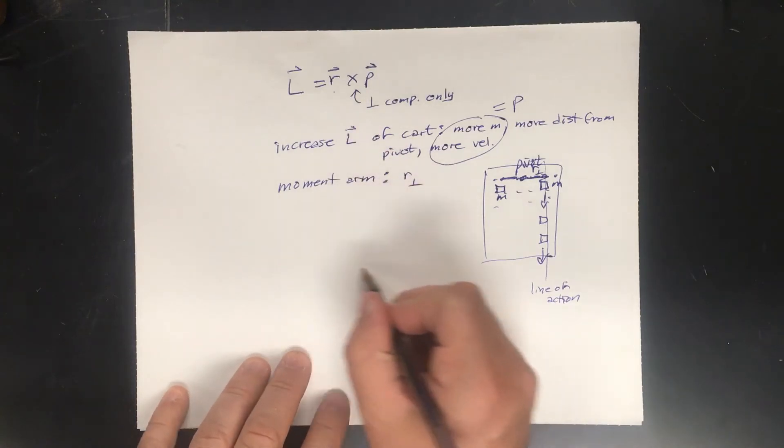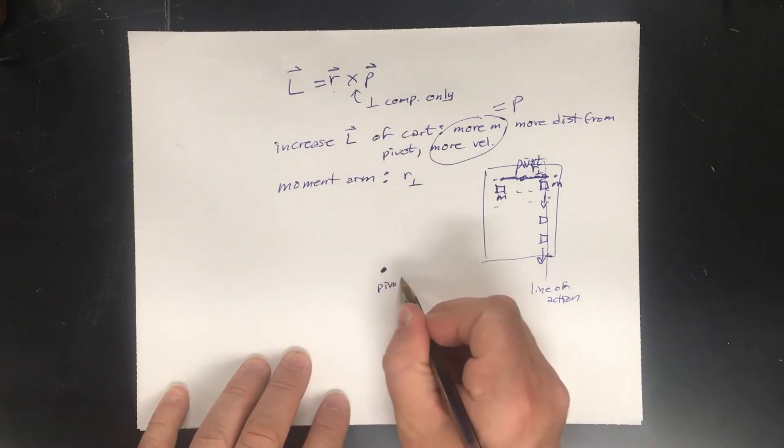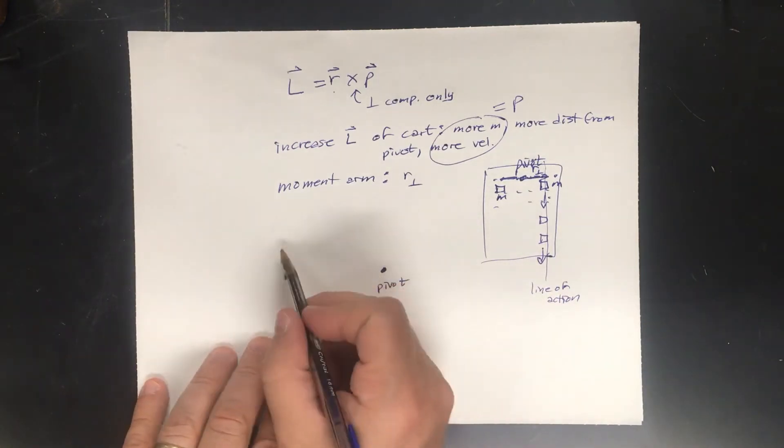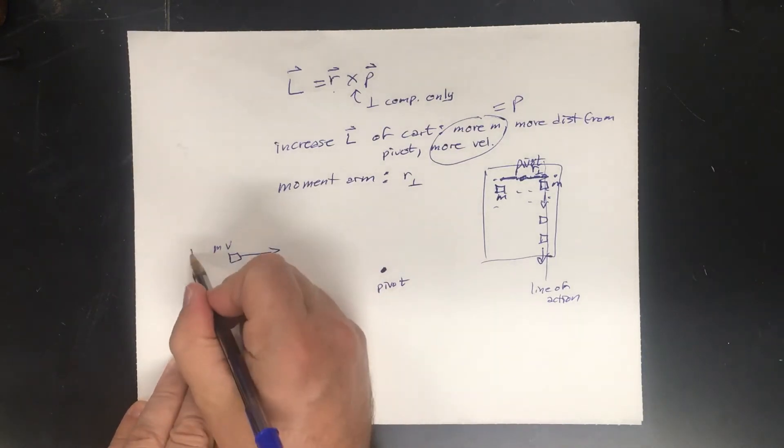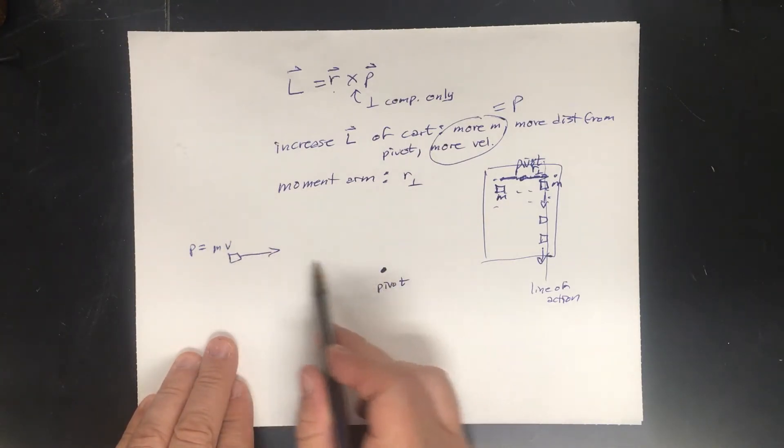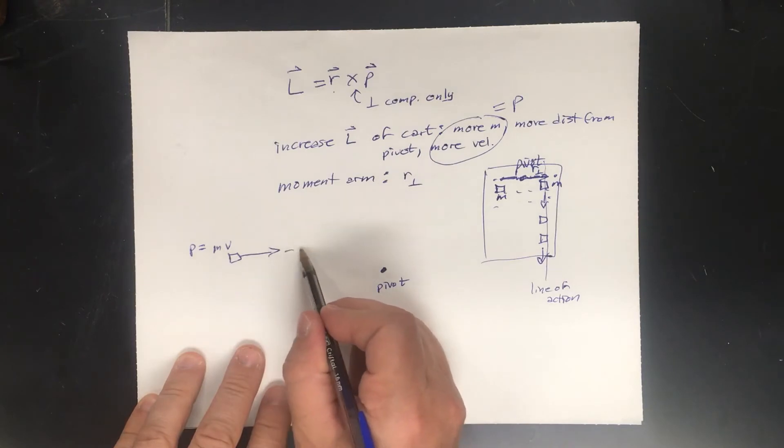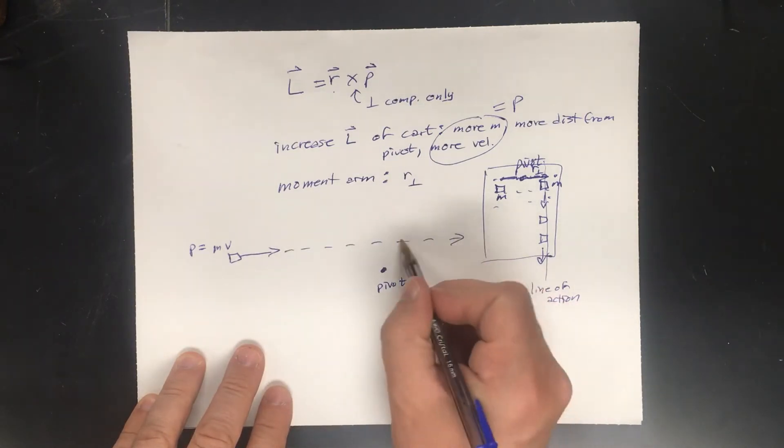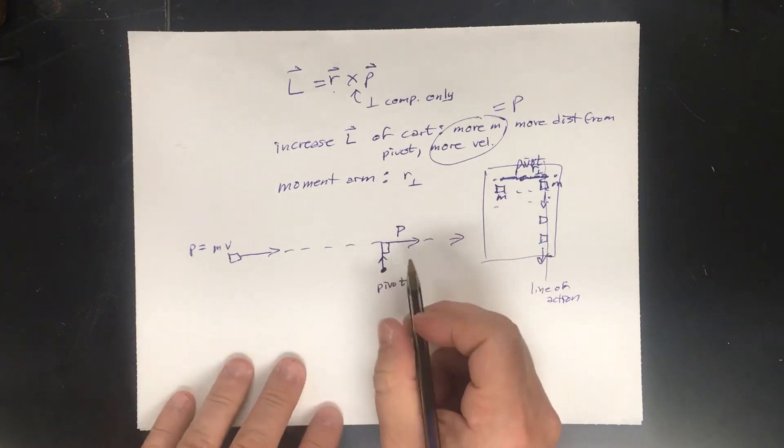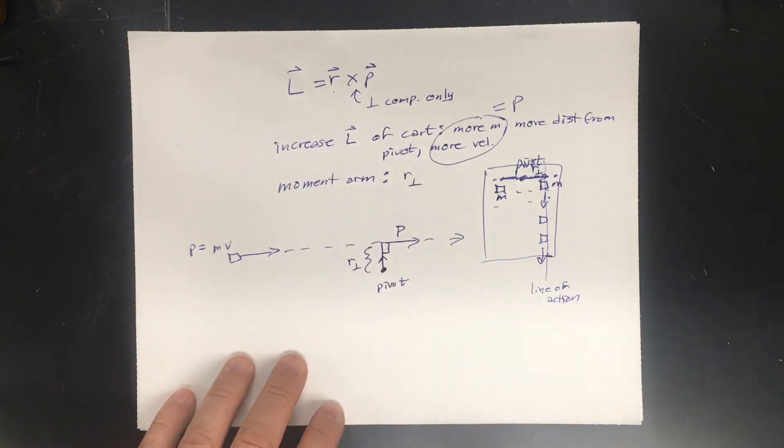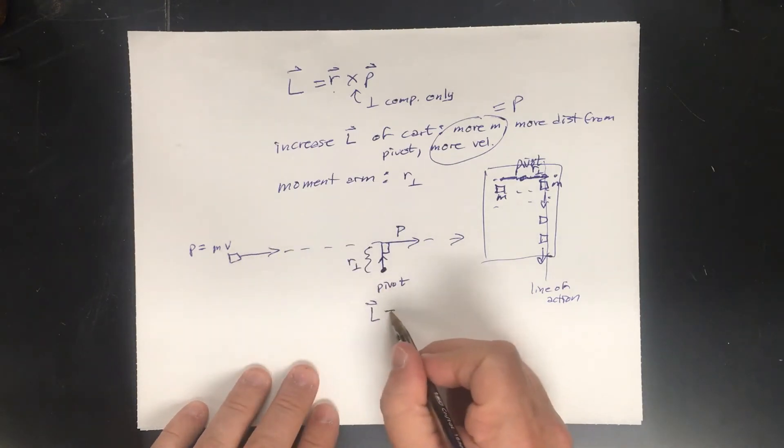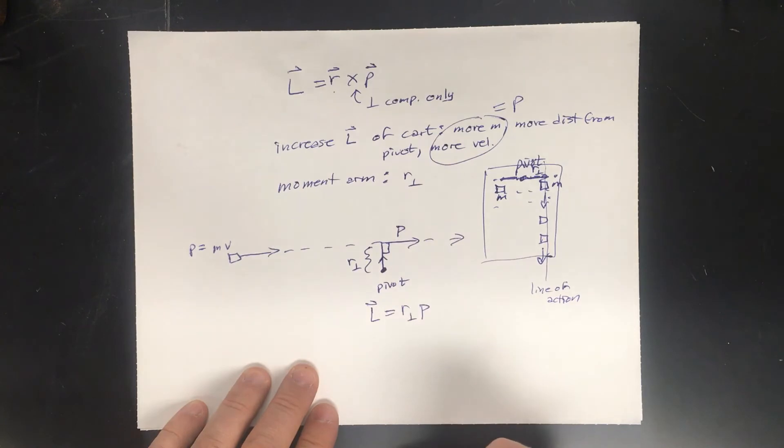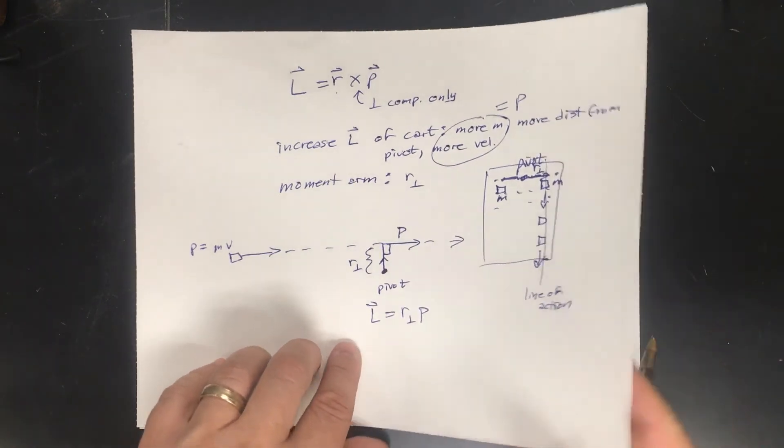So likewise, if I have a pivot, a place that I could pivot, it's also known as a reference point. So if I have an object moving this direction with mass M and a velocity of V, so it has a momentum of MV. Well, you can see that this is the distance, but that doesn't matter. You extend the line of action, pretending that this is where P is, and then perpendicular from the pivot to the line of action is R perpendicular. All right. Then this would tell you how much angular momentum you have. The angular momentum for this object would equal this R perpendicular times the momentum.